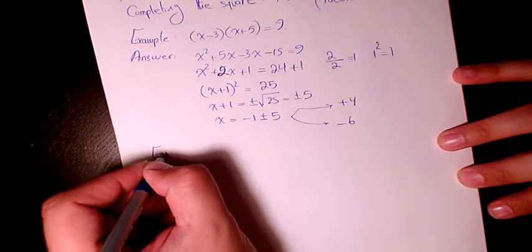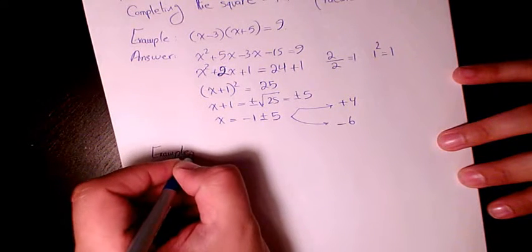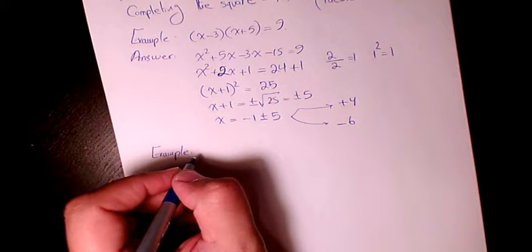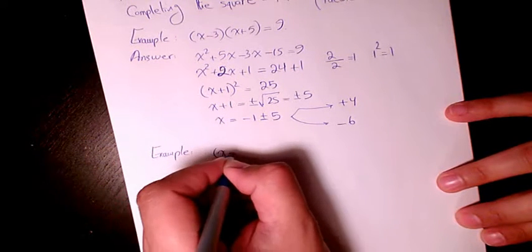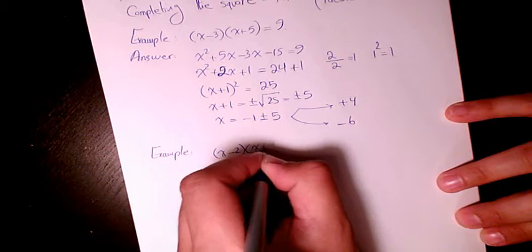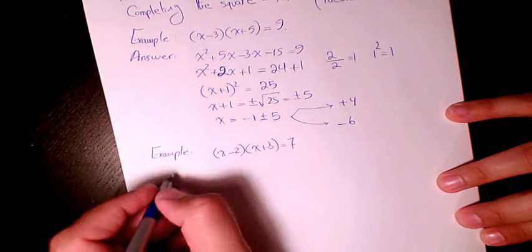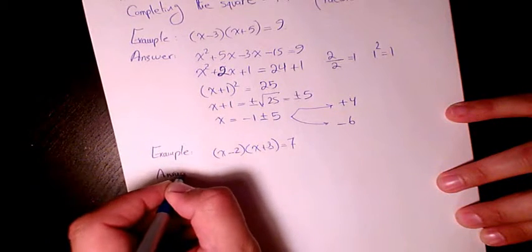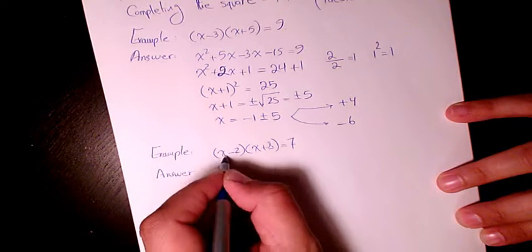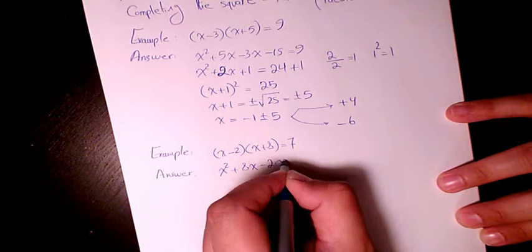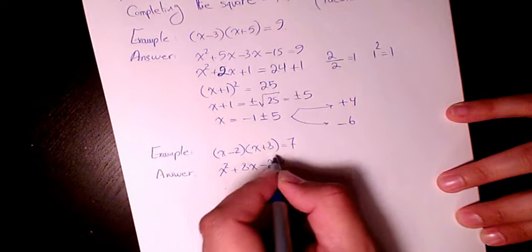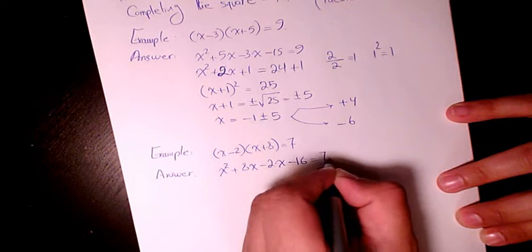Next example. We have x minus 2 times x plus 8 equals to 7. The answer is x times x is x squared. X times 8 is 8x. Negative 2 times x is negative 2x. Negative 2 times 8 is negative 16 equals to 7.